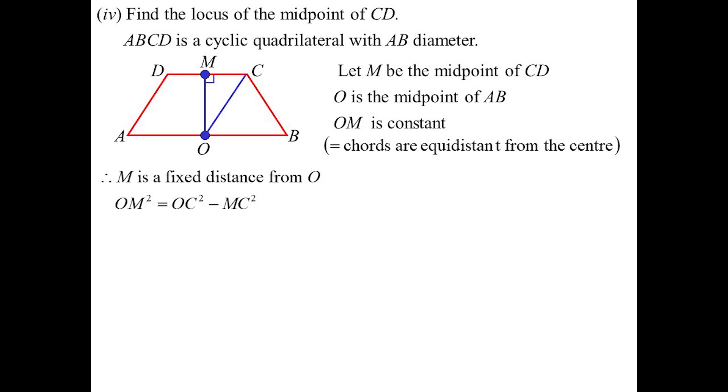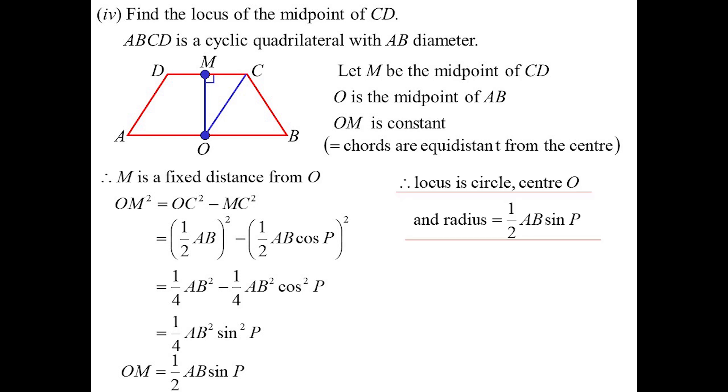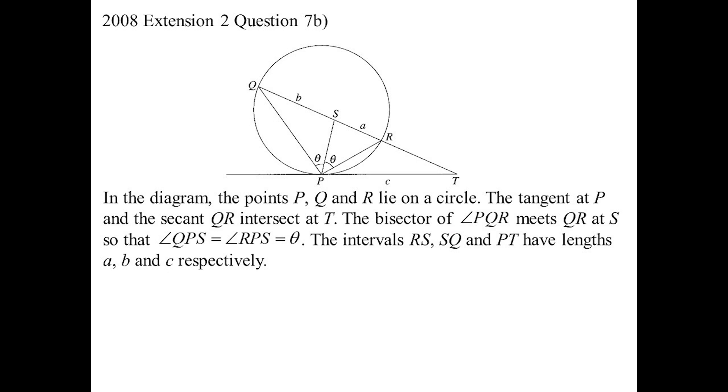I thought let's actually define the circle a bit, so I'm going to find the radius. Using Pythagoras, OM squared is OC squared minus MC squared. There's my radius: a half AB sine P. So it's a circle center O, radius a half AB sine P. They'd probably just want a circle, but hey, that was fun.